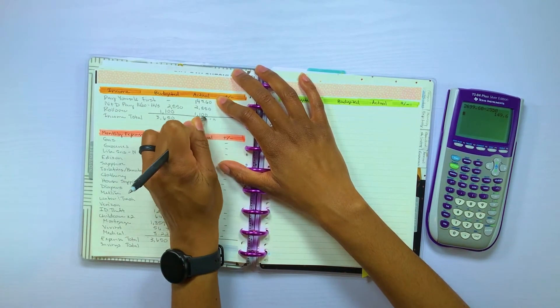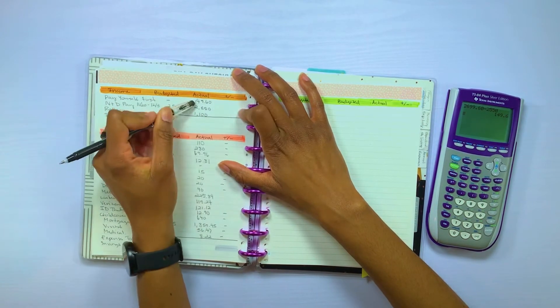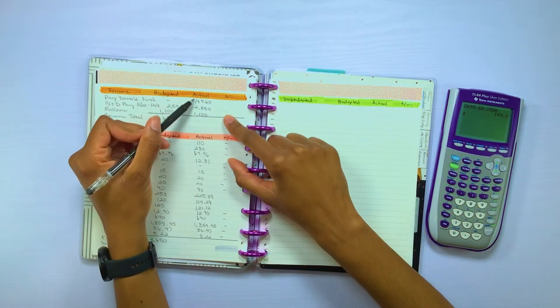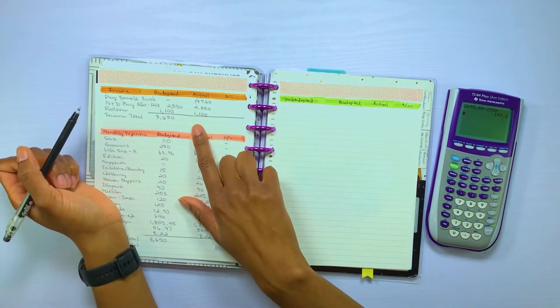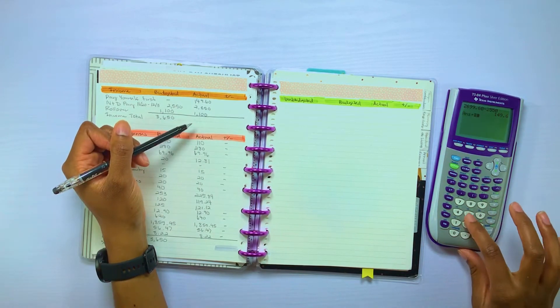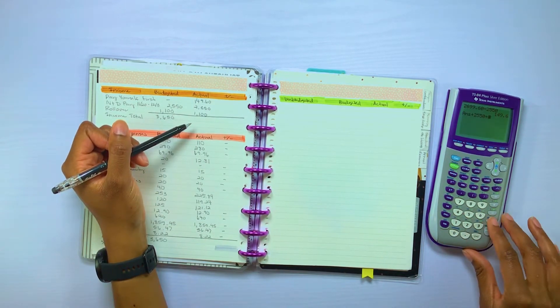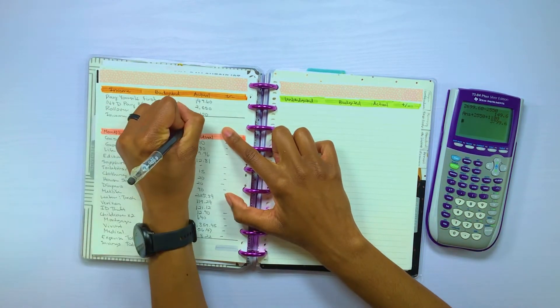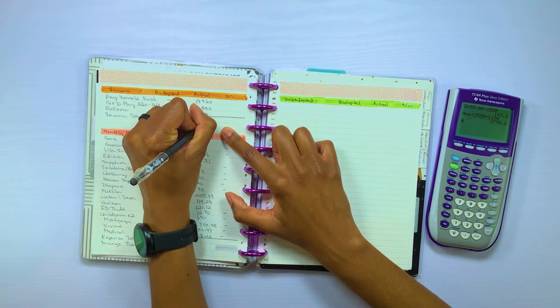So right when our paycheck came in, this is the amount that we automatically transferred to our savings account. So let me add up all of this to get our income total for this paycheck. So that is $3,799.60.